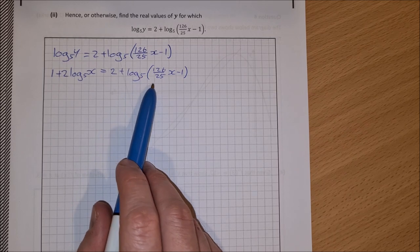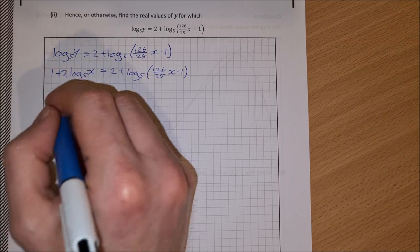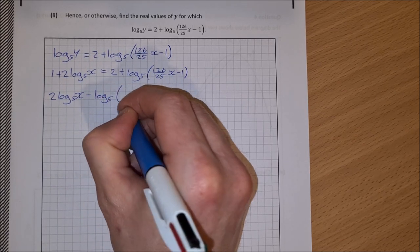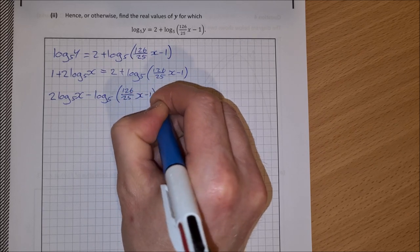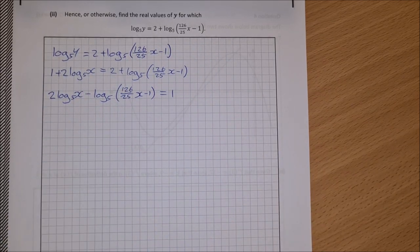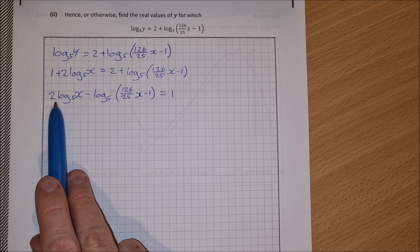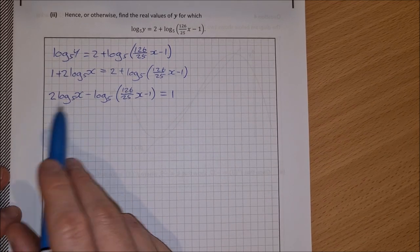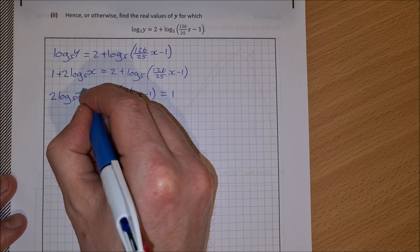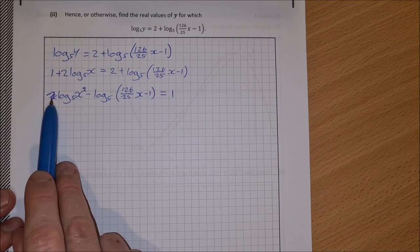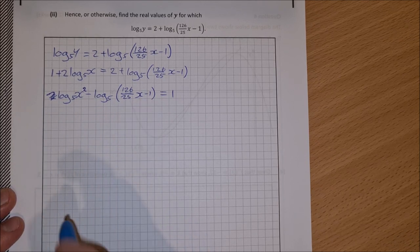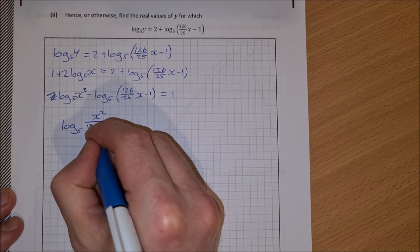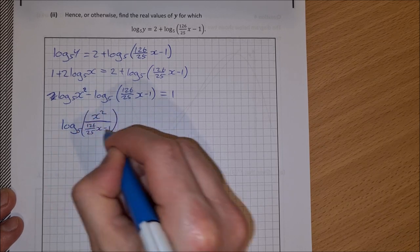Taking all the log terms to the left-hand side: 2 log base 5 of x minus log base 5 of (126/25 · x − 1) = 2 − 1 = 1. Using laws of logs, I bring the 2 up as a power, giving log base 5 of x² minus log base 5 of (126/25 · x − 1), which equals log base 5 of [x² / (126/25 · x − 1)] = 1.